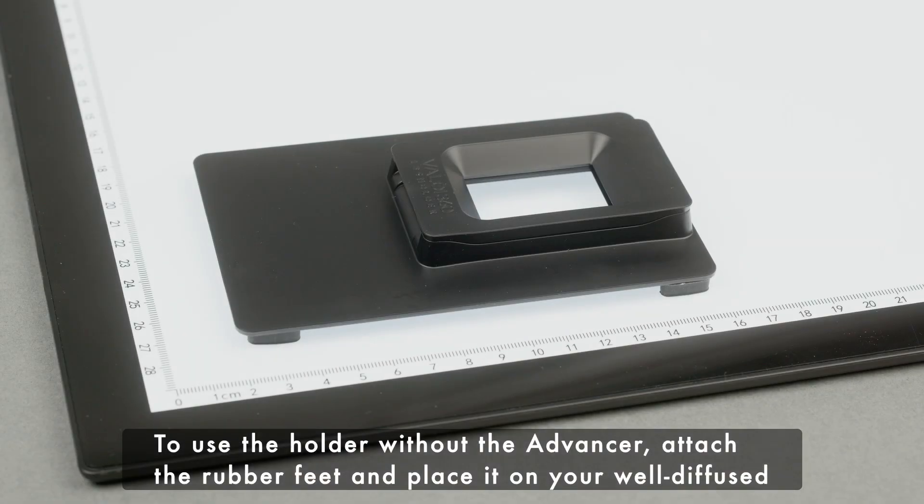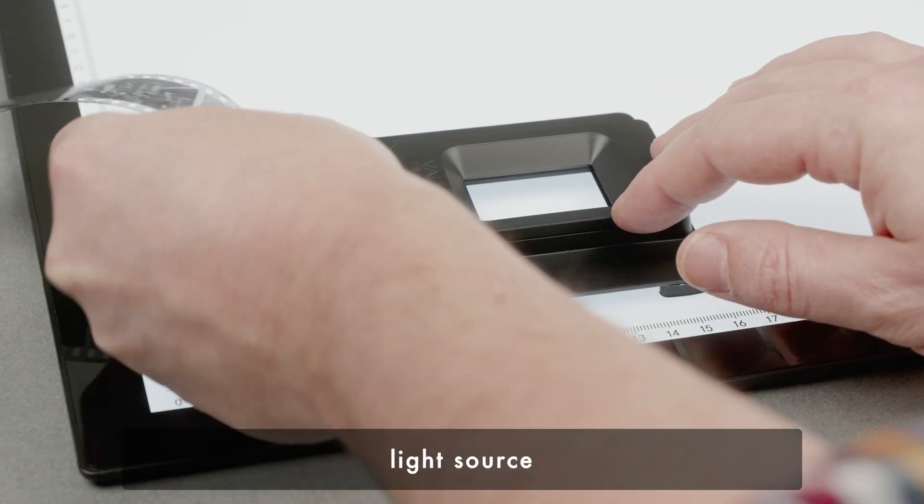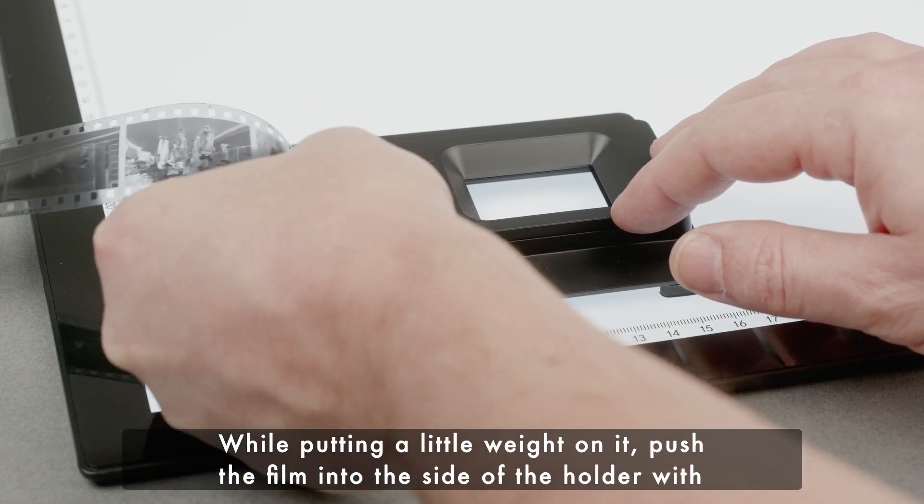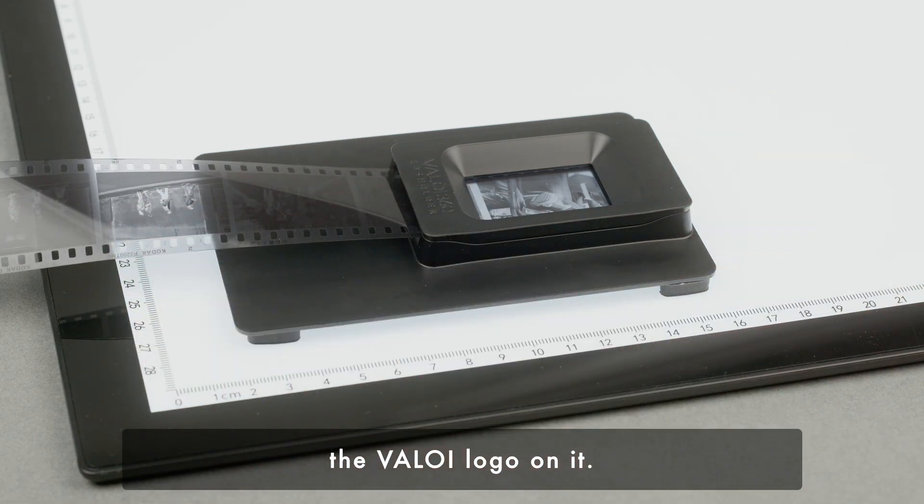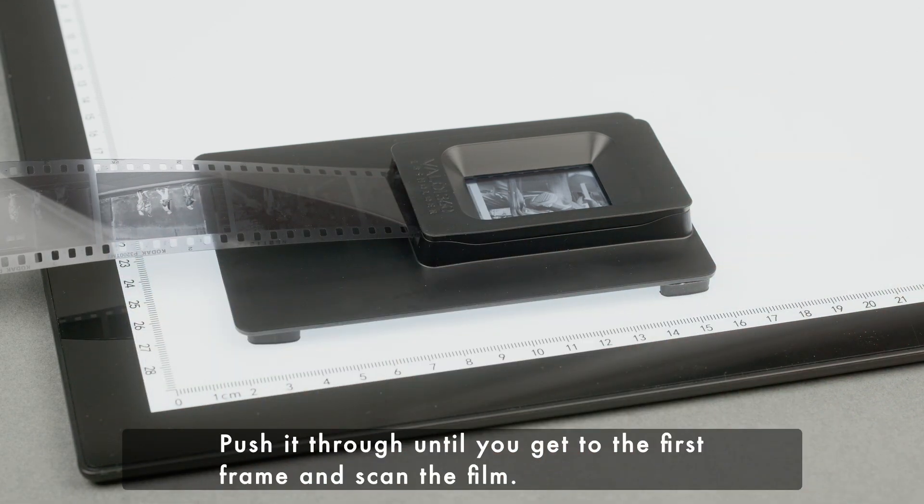To use the holder without the Advancer, attach the rubber feet and place it on your well-diffused light source. While putting a little weight on it, push the film into the side of the holder with the Valoy logo on it. Push it through until you get to the first frame and scan the film.